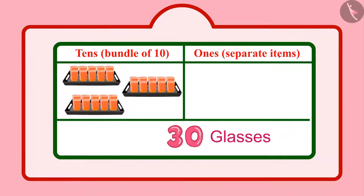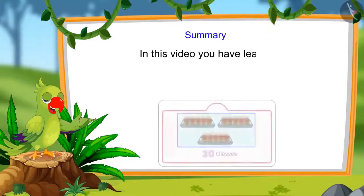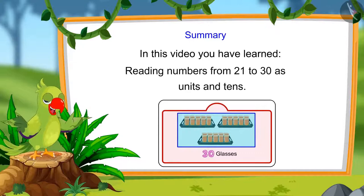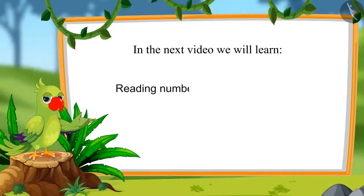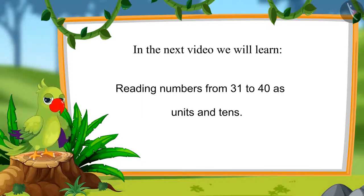So, children, this means today 30 glasses of sherbet were made in Chotu's house. That was all for today. In this video, you learned numbers from 21 to 30 and how to read those numbers as units and tens. In the next video, we will learn to read numbers from 31 to 40. Until then, bye, children.